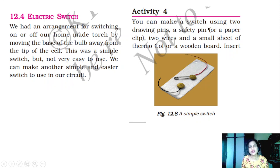Activity 4: You can make a switch using two drawing pins, a safety pin or a paper clip, two wires, and a small sheet of thermocol and a wooden board. These are required for making a switch.